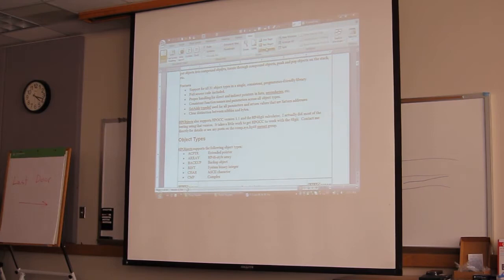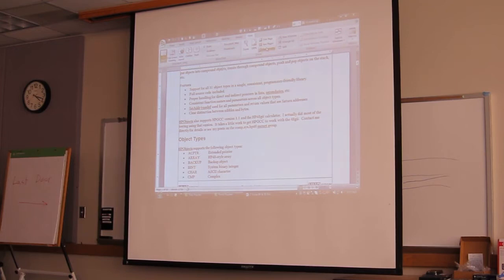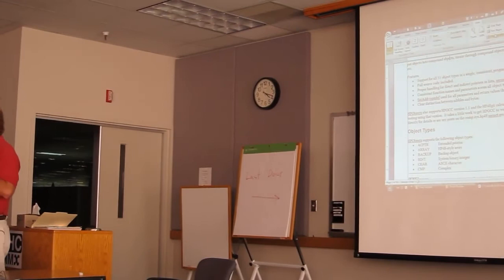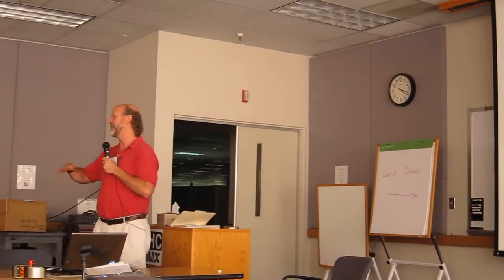The full source code is included with this, so you can look at it, recompile it, do whatever you want. It has proper handling for direct and indirect pointers and things like lists and secondaries, programs, that kind of thing. This is getting a little esoteric, but if you create a list and you put in the numbers, the real numbers 1, 2, and 4.7, what's actually stored in that list is a pointer to a copy of the number 1 in ROM, a pointer to a copy of the number 2 in ROM, and then an actual number that's whatever the other one I said.